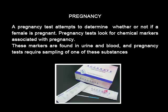A pregnancy test attempts to determine whether or not a female is pregnant. Pregnancy tests look for chemical markers associated with pregnancy. These markers are found in urine and blood, and pregnancy tests require sampling one of these substances.